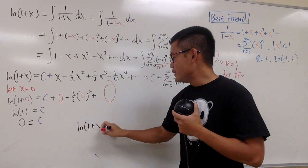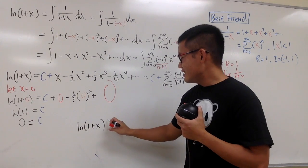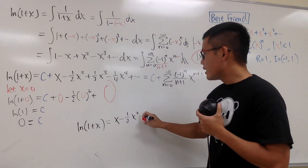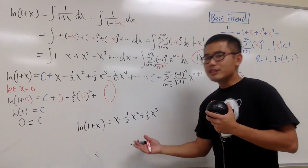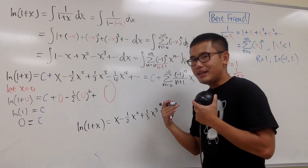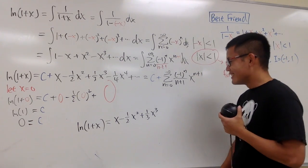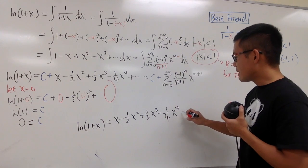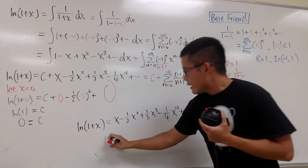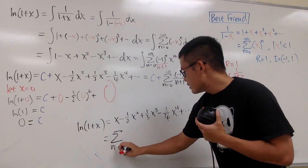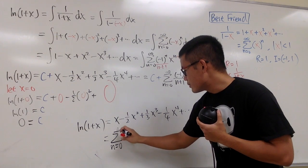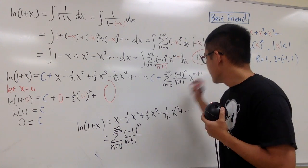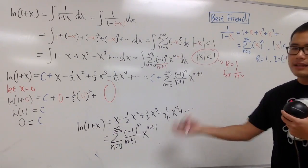So ladies and gentlemen, the power series for ln(1+x) is: x minus one-half x squared plus one-third x to the third power minus one-fourth x to the fourth power, and so on. Notice all odd and even powers appear — unlike inverse tangent — and the signs alternate. In summation form, since c is 0, this is the sum from n equals 0 to infinity of negative 1 to the nth power over n plus 1, times x to the n plus 1.